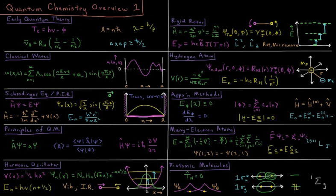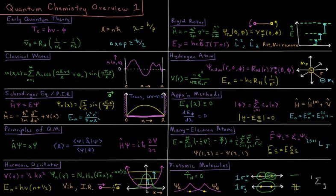Our next model system is the harmonic oscillator, which has a quadratic potential 1/2 kx squared, where k is a spring constant. The solutions are a Gaussian times the Hermite polynomials, with the ground state being just a Gaussian function. The energy levels are evenly spaced, with the spacing determined by the reduced mass of the two atoms in the bond and the spring constant. This is a model for vibrating molecules and can explain the IR spectra of molecules.